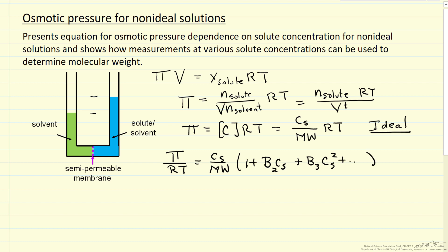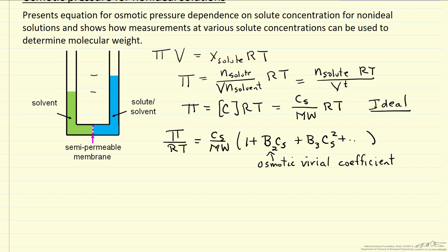The idea is that now we're accounting for the fact that there are interactions between the solute, and this is the osmotic virial coefficient. So let me divide both sides now by CS, and I'm going to write the equation, osmotic pressure over RT CS then is equal to one over the molecular weight plus B2 times CS over the molecular weight plus B3 CS squared over the molecular weight, and of course more terms in theory.